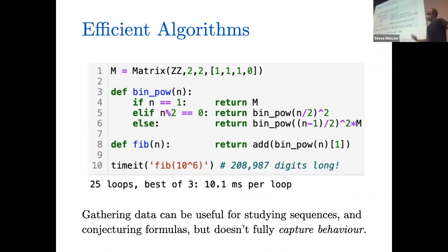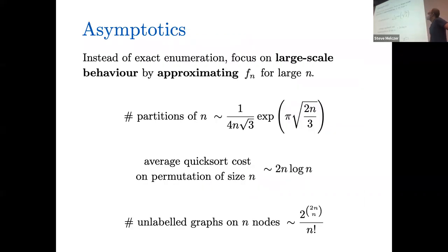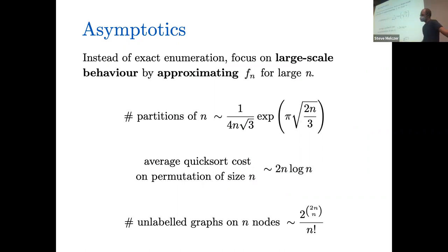Algorithms are good for generating data and for trying to guess behavior of sequences. But of course they don't fully capture the behavior of a sequence. So instead of exact enumeration or straight-up counting, oftentimes you'd like to look for asymptotics — we want to approximate the behavior of f(N) as N gets large. There are many famous asymptotic formulas in the literature: partitions, runtime of Quicksort, unlabeled graphs on N nodes. This tells you approximate behavior in very nice formulas with some error that doesn't really matter when N gets large.